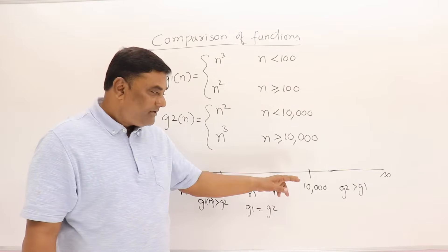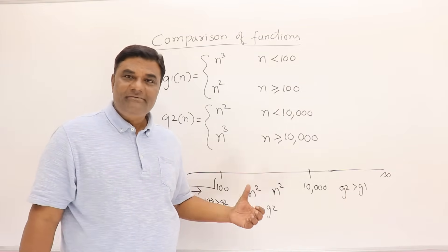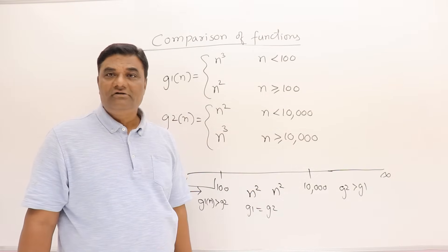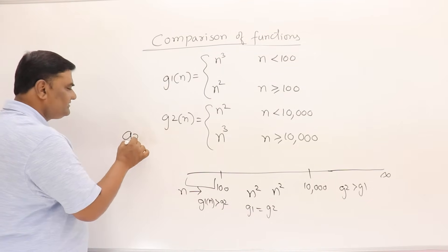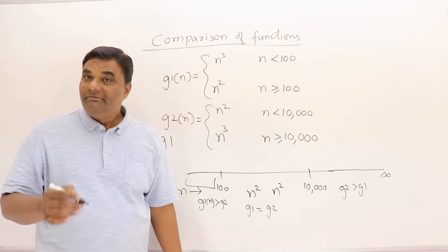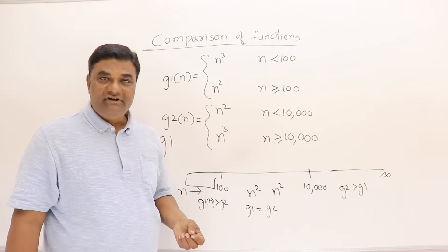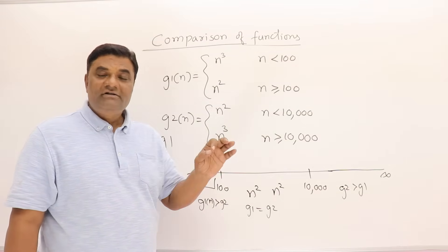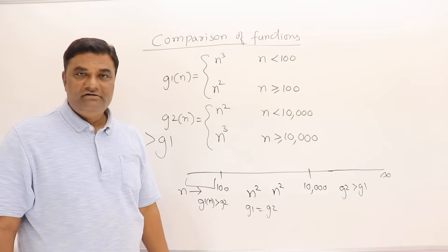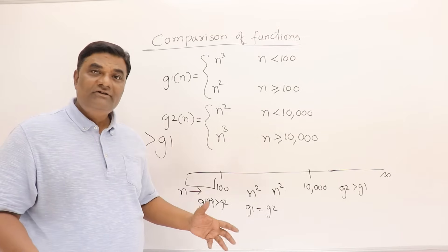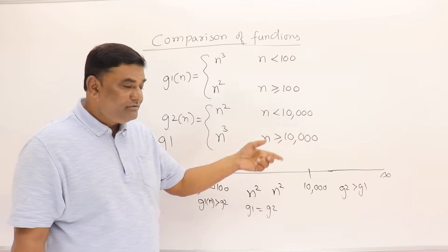From n = 10,000 onwards, g2 is always greater than g1, and this holds all the way to infinity. Before that point they were alternating or equal, but asymptotically we care about large n — from 10,000 to infinity g2 dominates. So g2 is greater than g1. The key point: when determining which function is asymptotically greater, we only need it to hold from some large value of n onwards.